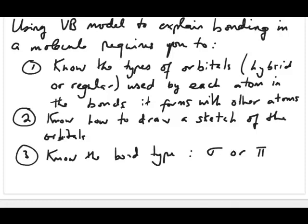This video will show several examples of how to use the valence bond model to represent bonding in a molecule. If you're asked to explain bonding using the valence bond model, you generally need to do three things. First, you need to know the types of orbitals being used by each atom to make bonds — these can be regular orbitals from quantum mechanics (SPDF) or hybrid orbitals, which are a mixture of the regular orbitals.